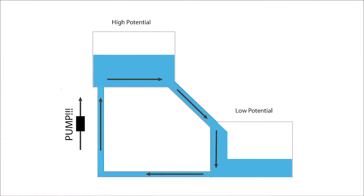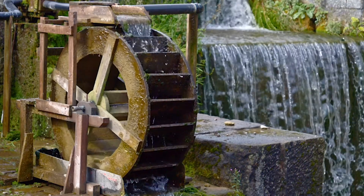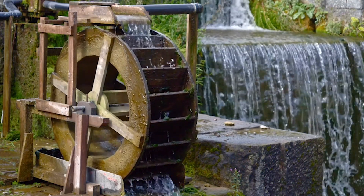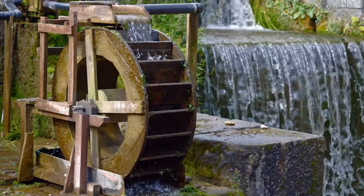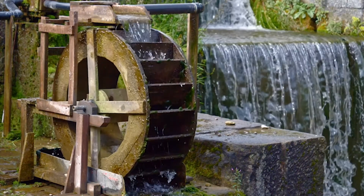The pump provides additional energy to drive the system by taking the water with low potential energy and pumping it back to the higher tank. The water that has reached the higher tank now has high potential energy due to the increased elevation and is able to flow down again, repeating this cycle over and over.